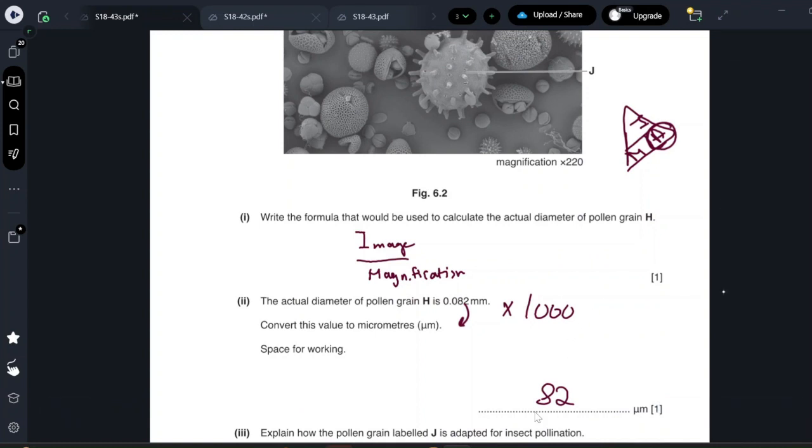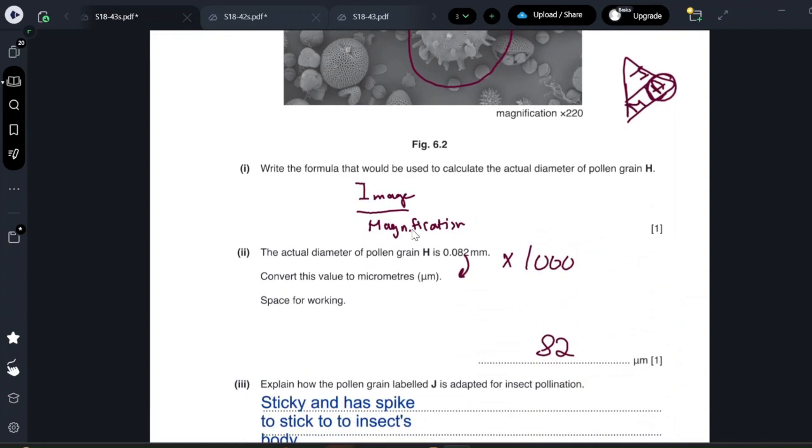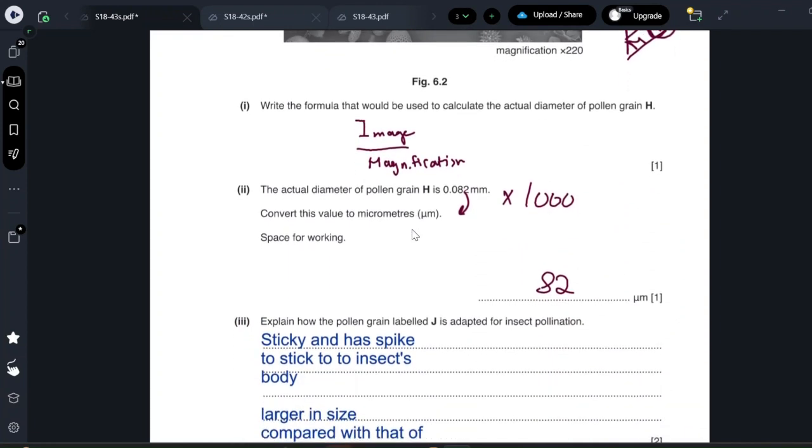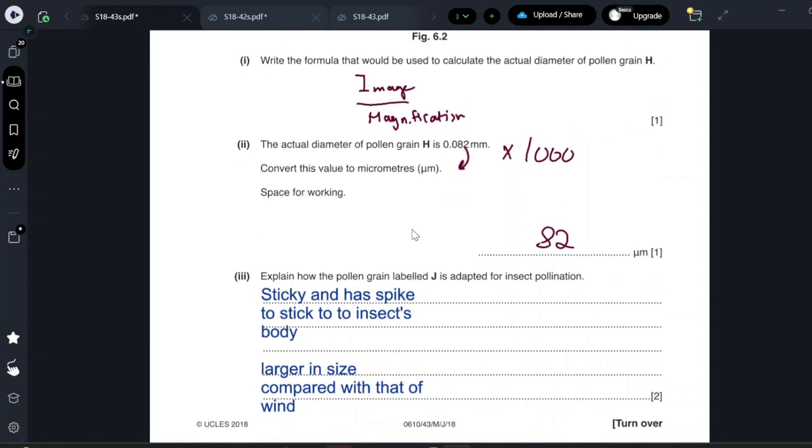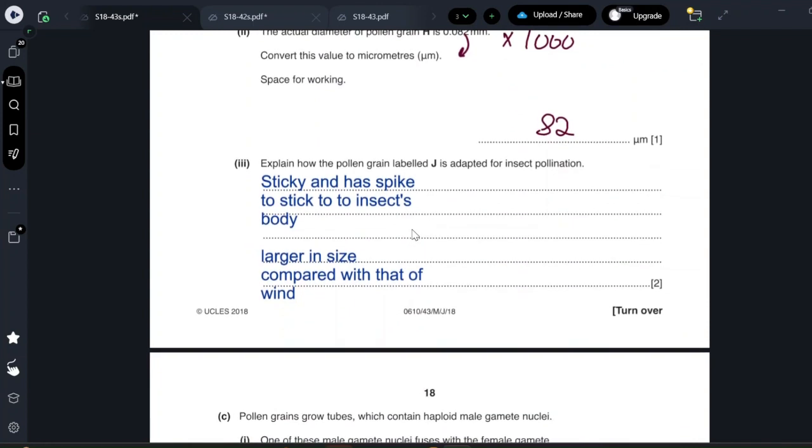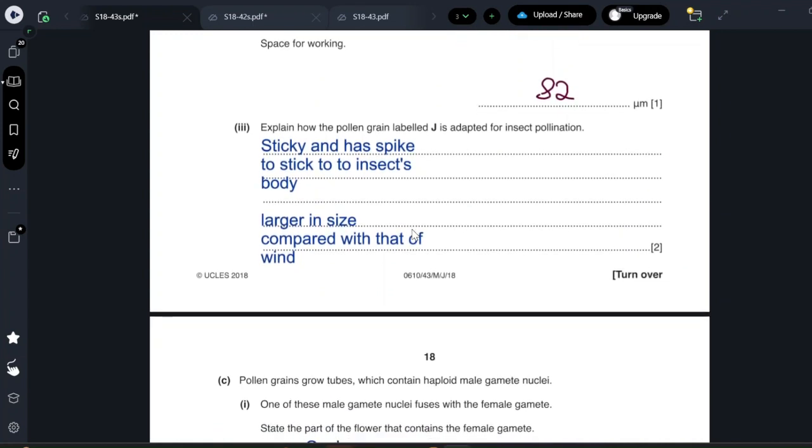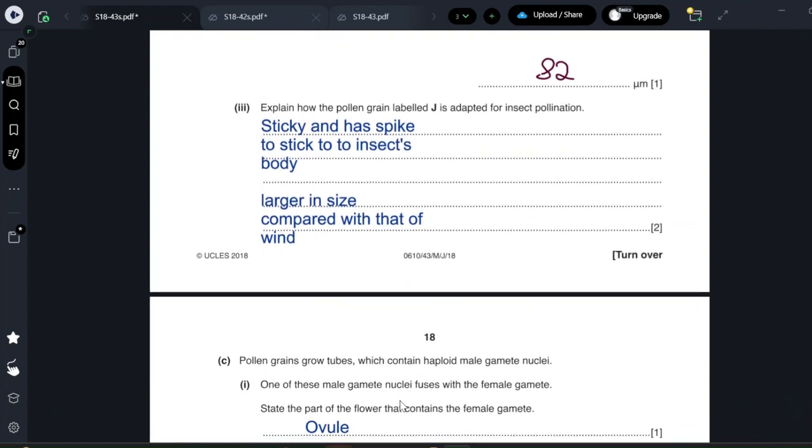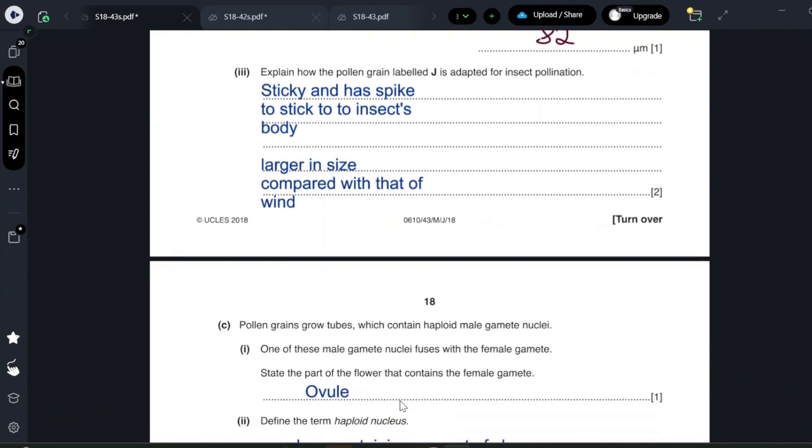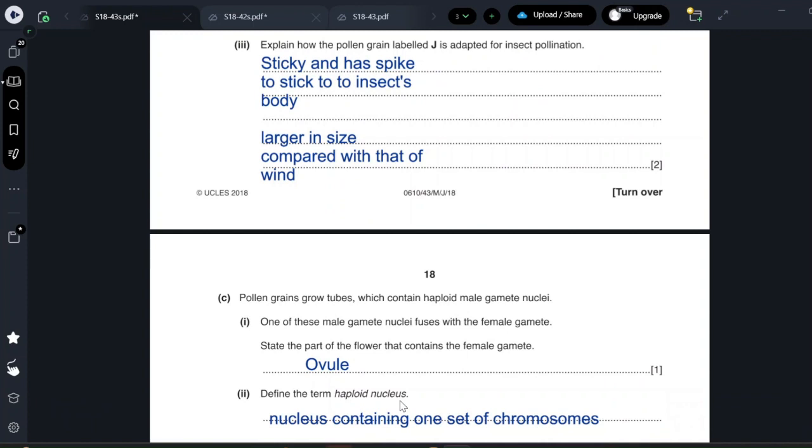Explain how the pollen grain label G is adapted to insect pollination. The pollen grains for the insect pollinated flowers are sticky and has spikes to stick to the insect's body. They are larger in size compared with that of the wind. The wind pollen grains has to be small and light in order to be carried by the wind. Pollen grain grows tubes which contains haploid male gamete nuclei. One of these male gamete nuclei fuses with the female gamete. State the part of the flower that contains the female gamete. The female gamete is the part that contains the nucleus with half of the chromosomes. It is in the ovule. What is a haploid nucleus? It is a nucleus containing set of chromosomes, one set of chromosomes. It has half the number so it has one set of chromosomes.